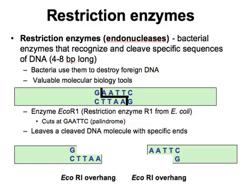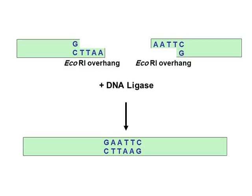أشهر مثال هو الـ EcoR1 — وهو Ecoli Restriction Enzyme R1 — الذي يقطع دائماً عند الـ palindromic sequence: GAATTC. لأن G يقابل C وAA يقابل TT، فهي palindromic sequence. القطع ينتج ما يُعرف بالـ sticky ends — أو الـ EcoR1 overhang — وهي أطراف أحادية الشريط تنتظر التكامل مع الـ complementary strand لتلتصق بها.